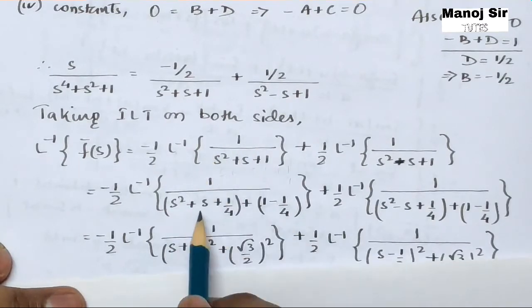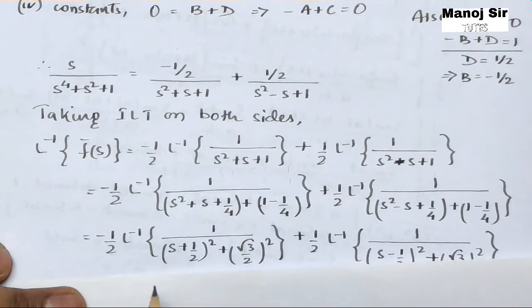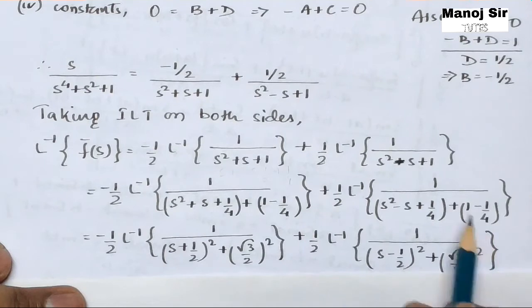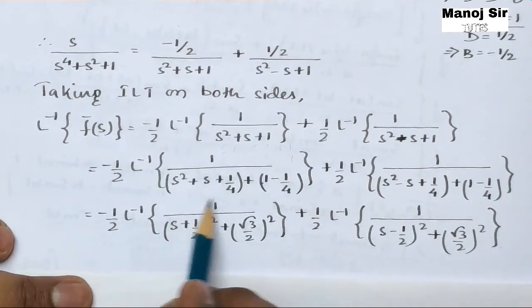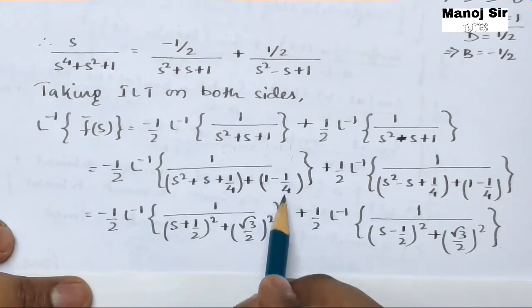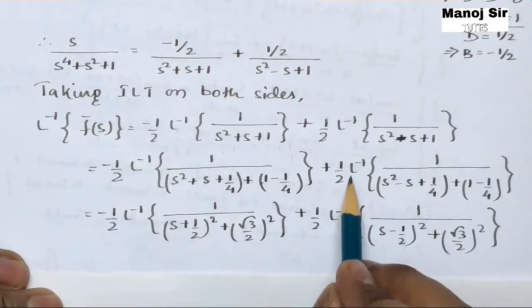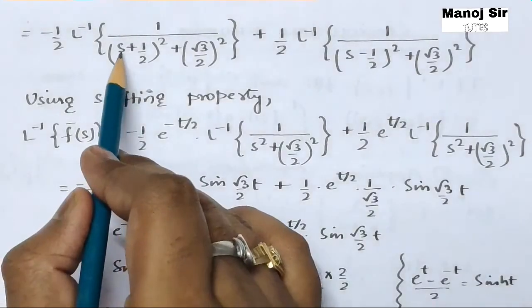To evaluate each term, we complete the square. For s² + s + 1: adding and subtracting 1/4 gives (s + 1/2)² + 3/4 = (s + 1/2)² + (√3/2)². For s² − s + 1: similarly gives (s − 1/2)² + (√3/2)². So we have −(1/2)·L⁻¹{1/[(s+1/2)² + (√3/2)²]} + (1/2)·L⁻¹{1/[(s−1/2)² + (√3/2)²]}.